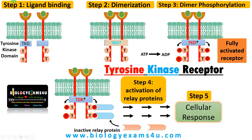To summarize the tyrosine kinase pathway: Step 1 is ligand binding — on binding of the ligand, the receptor dimerizes as the monomers come together. Step 2: the tyrosine kinase domain becomes activated. Step 3: tyrosine residues on the receptor are phosphorylated by the tyrosine kinase domain, forming a fully activated receptor. Step 4: relay proteins are phosphorylated by the phosphate on tyrosine residues. These relay molecules further phosphorylate or activate many downstream signaling molecules, leading to activation of a target molecule — often a transcription factor — causing gene expression and cellular response.